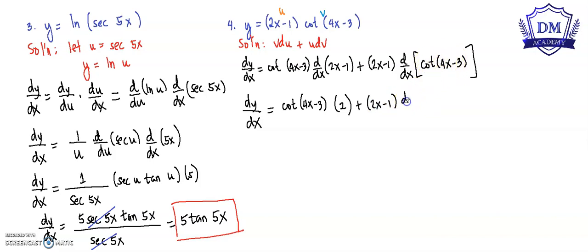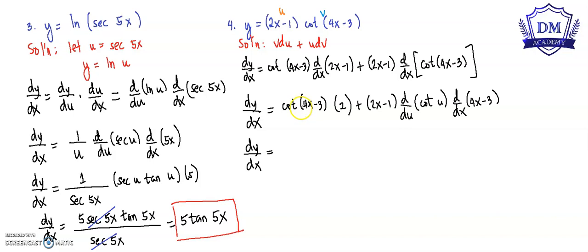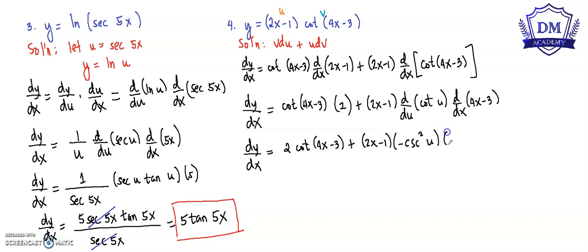Using the chain rule again, we have d/du of cotangent u times d/dx of 4x minus 3. So dy/dx equals cotangent of 4x minus 3 multiplied by 2, giving 2 cotangent of 4x minus 3, plus 2x minus 1 times the derivative of cotangent u, which is negative cosecant squared u, multiplied by the derivative of 4x minus 3, which is 4.